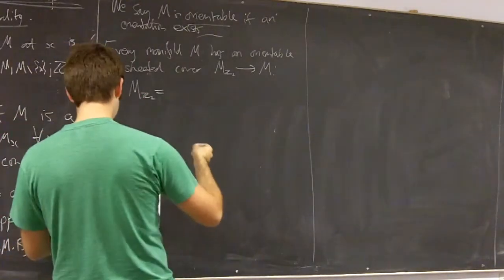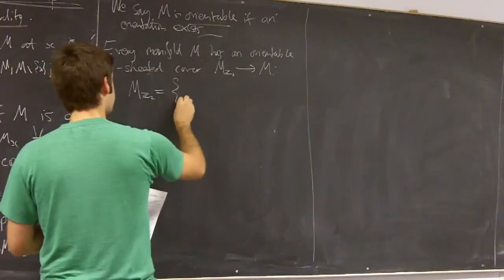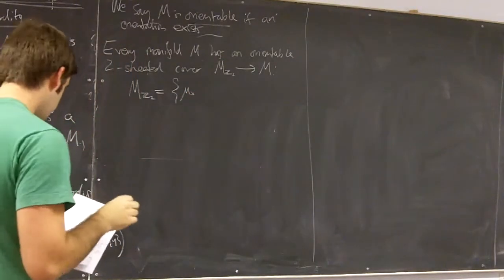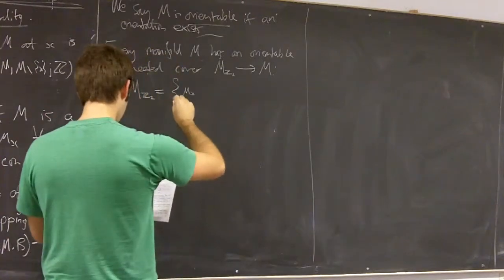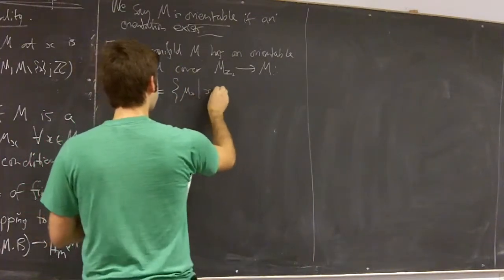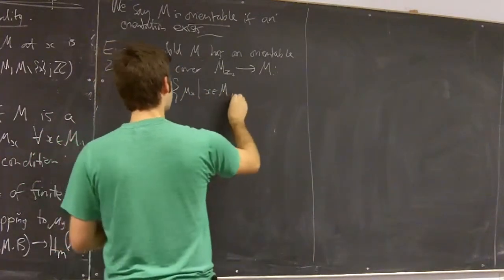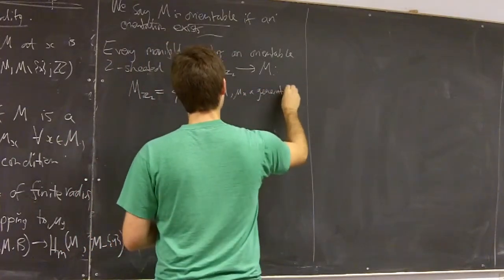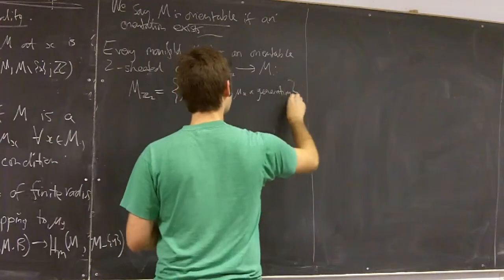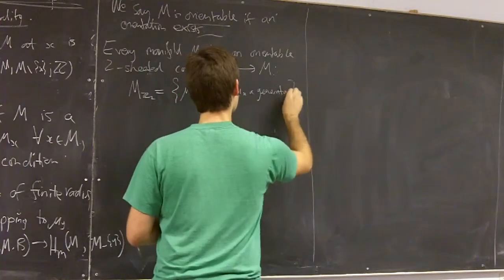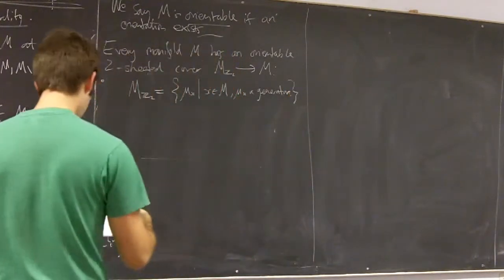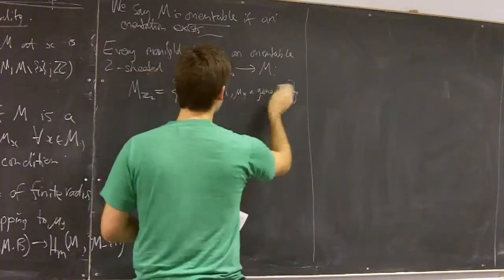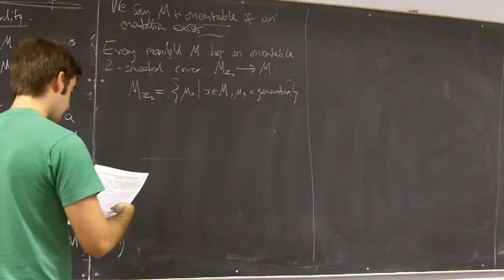this space is going to be the collection of all local orientations μ_x for all points x in M and μ_x a generator of this local relative homology group generator